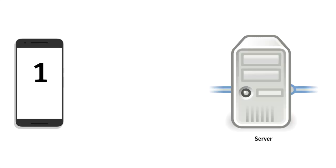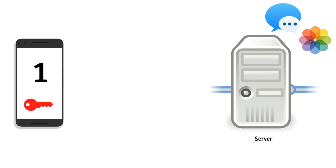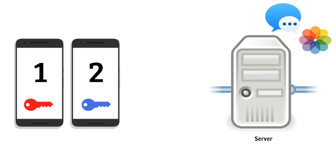Let's say device 1 is your smartphone and it wants to talk to the server. The server stores lots of personal information such as your text messages and photos, so it doesn't want to let just any device connect to it. Therefore, the server must authenticate that your smartphone is actually your smartphone. Each device stores something called a key, which is basically like a password. Another device, like your friend's smartphone, has a completely different password.